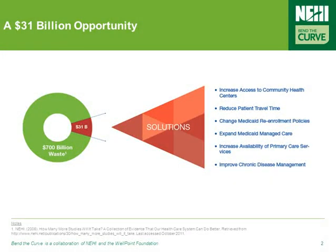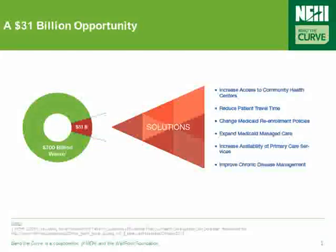Targeting the $31 billion spent annually on hospital admissions due to ambulatory care sensitive conditions, or ACSCs, requires building on proven practices and implementing policy actions that target the root causes of the problem. These include increasing access to primary care in community health centers, reducing patient travel time, increasing Medicaid re-enrollment time, and expanding the Medicaid Managed Care Program, among others.